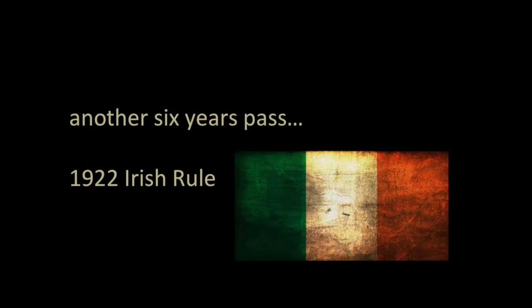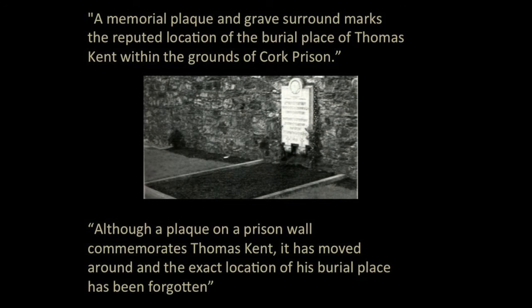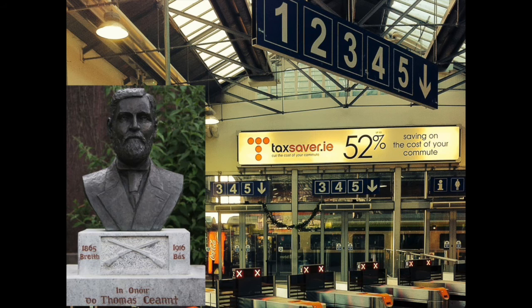Another six years passed under British rule, and in 1922 Ireland got Irish rule. What they did was place a memorial plaque in the reputed location of the burial place of Thomas Kent within the grounds of Cork prison. But this plaque had been moved around, so they weren't sure about the exact location. He wasn't forgotten though — in Cork especially. Kent Station, the railway station in Cork, is named after him, and there are also busts of Thomas Kent.